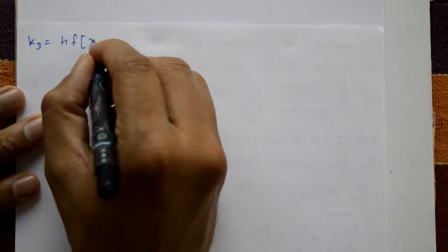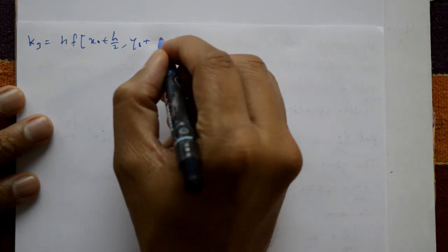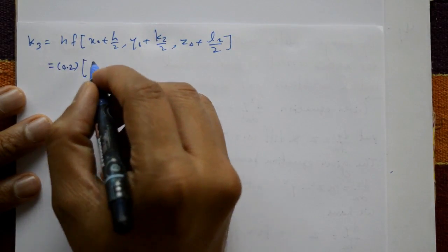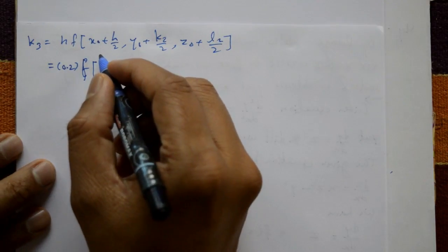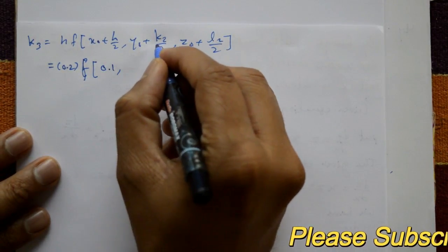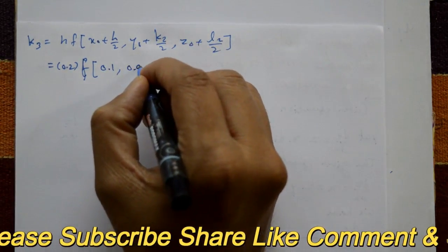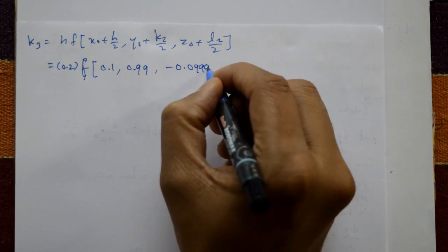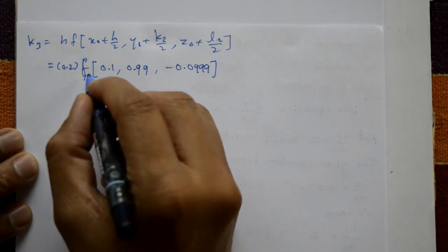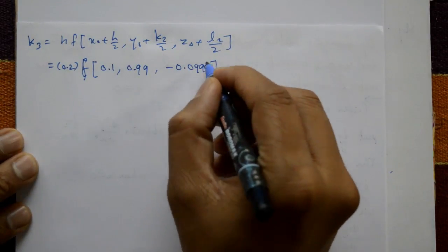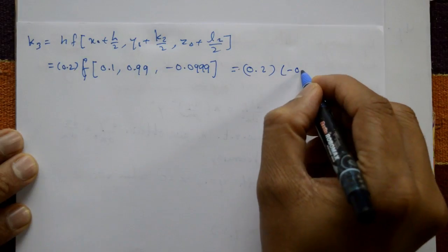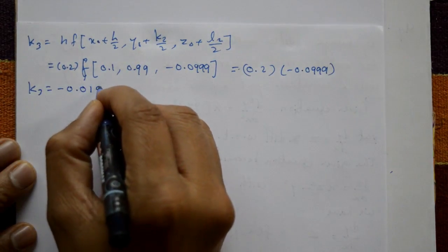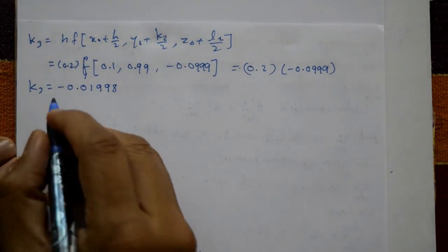k3 = h·f(x₀ + h/2, y₀ + k2/2, z₀ + l2/2) = 0.2·f(0.1, 0.99, -0.0999). Since f = z, k3 = 0.2 × (-0.0999) = -0.01998.